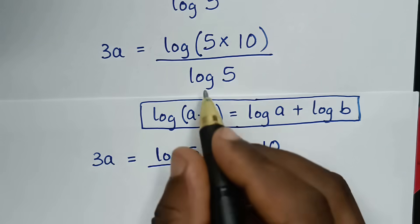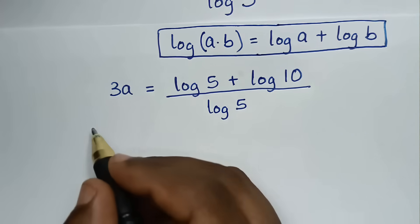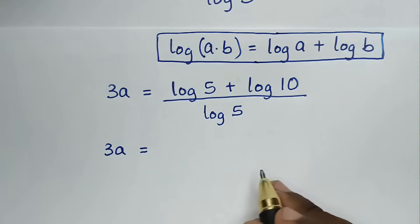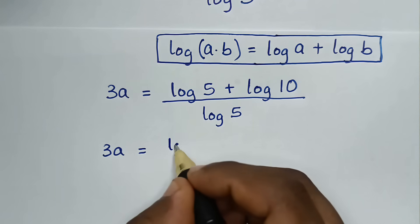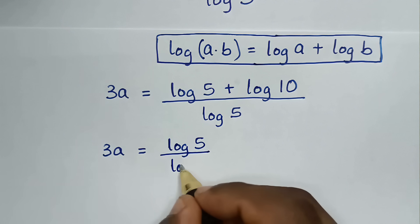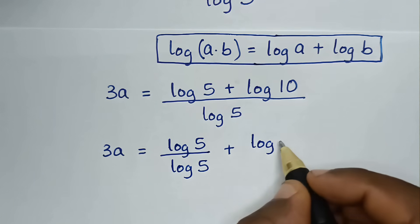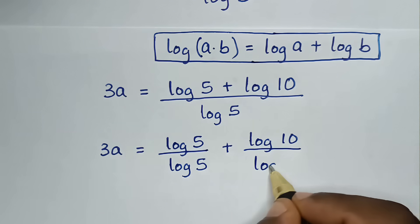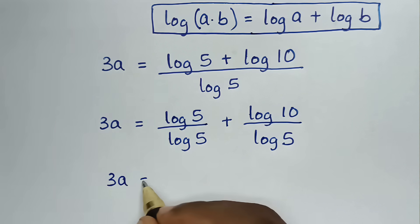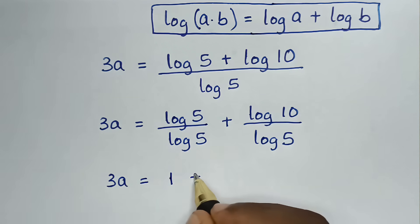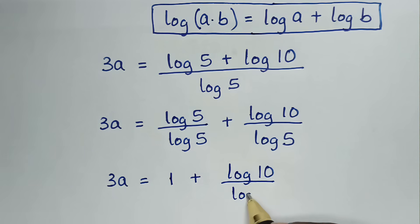Then over log of 5, we divide this into two parts: log of 5 over log of 5 plus log of 10 over log of 5. So it will be 3a is equal to log of 5 divided by log of 5, which is 1, plus log of 10 over log of 5.